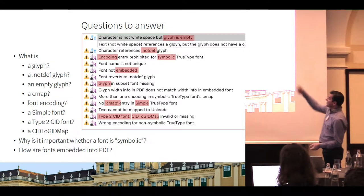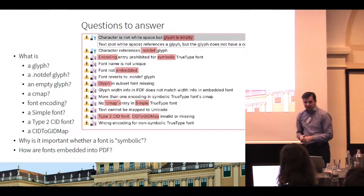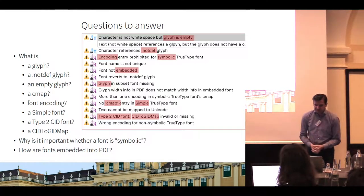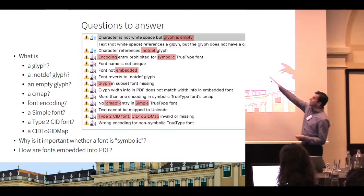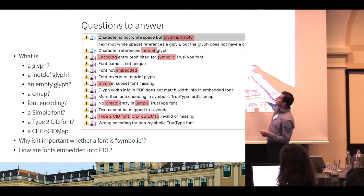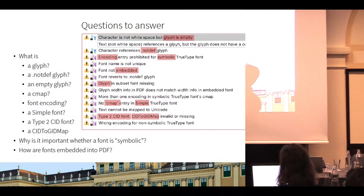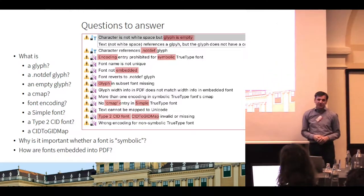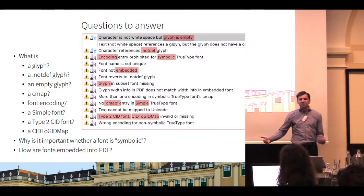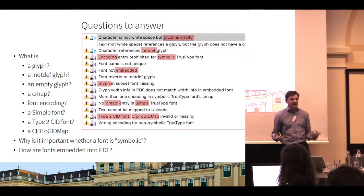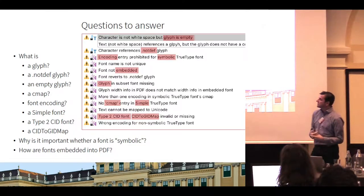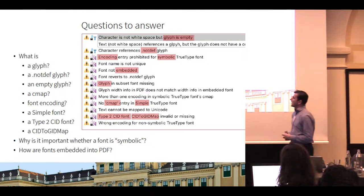'Font reverts to not-def glyph' — we need to understand what a not-def glyph is. Then 'glyph in subset font is missing' — again we need to understand what a glyph is. Then there is 'no CMAP entry in a simple TrueType font,' and a very cryptic one: 'type 2 CID font, CID to GID map invalid or missing.' Most users say they don't get that — what does it actually mean? I want to explain the meaning behind these checks.